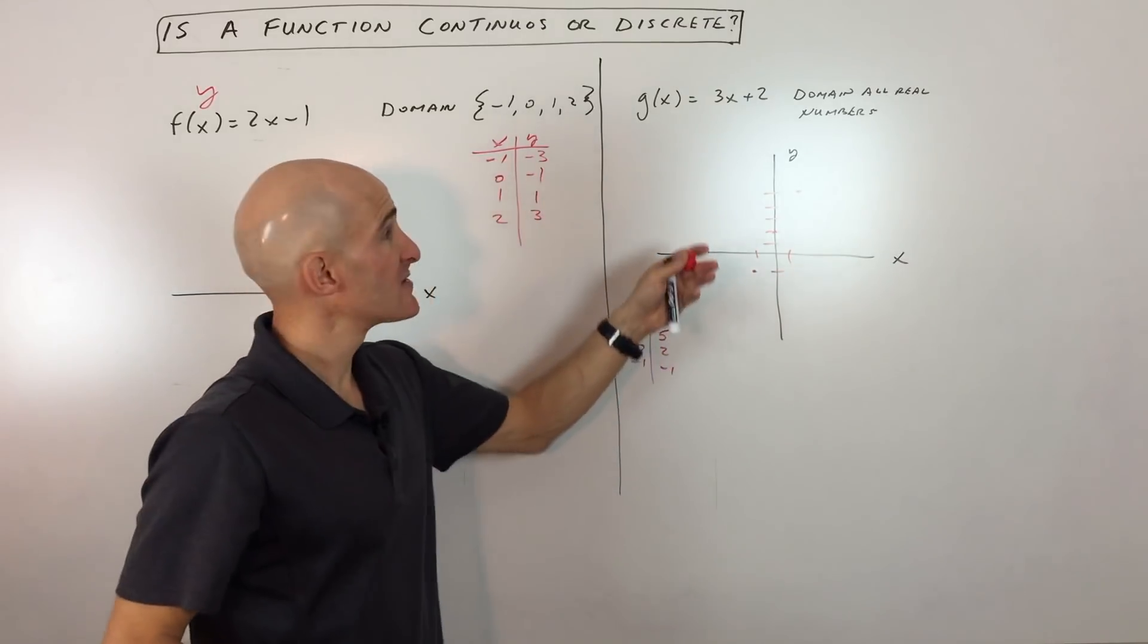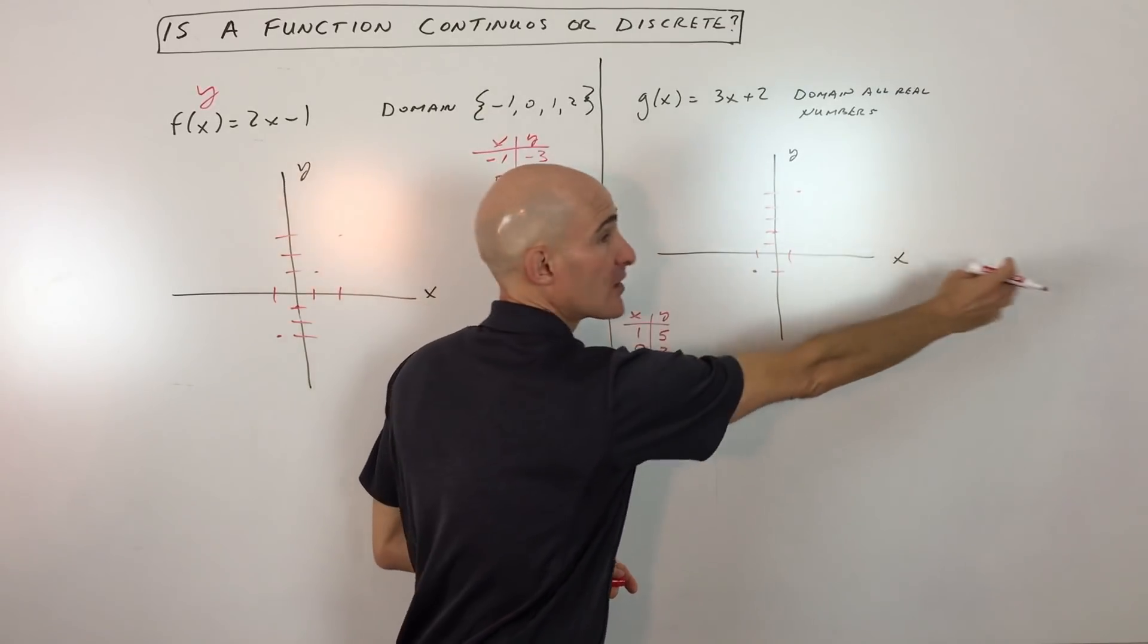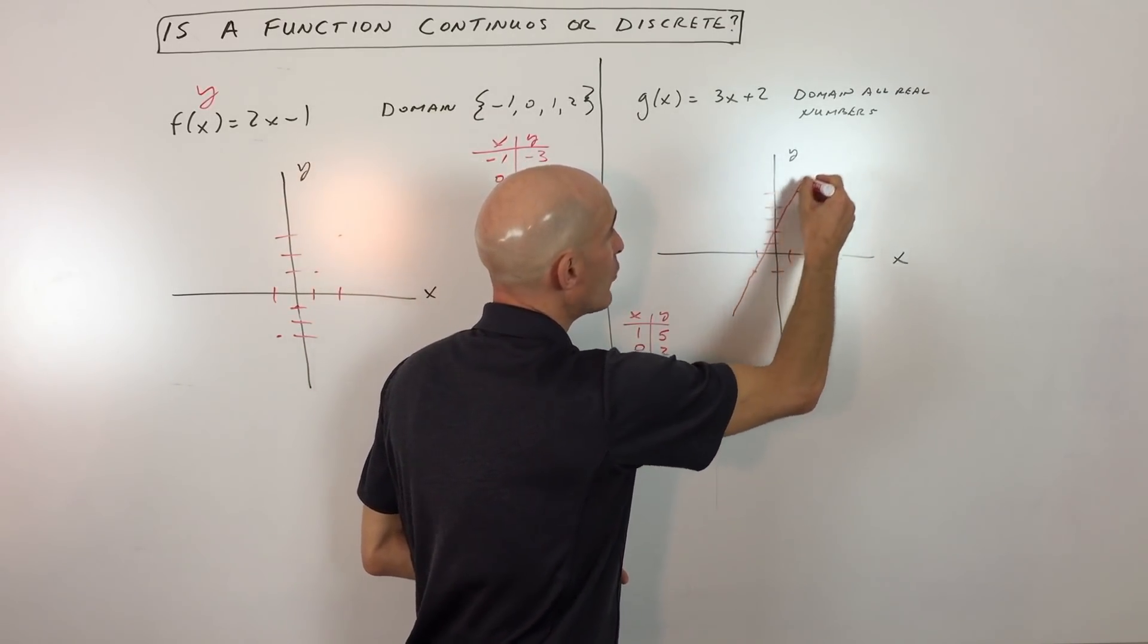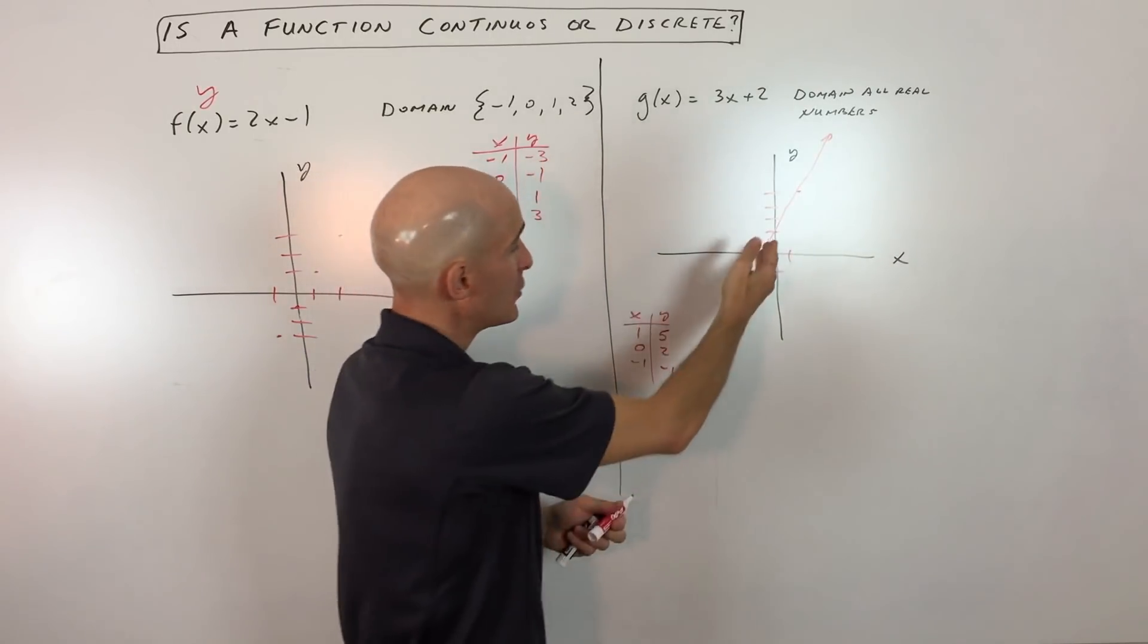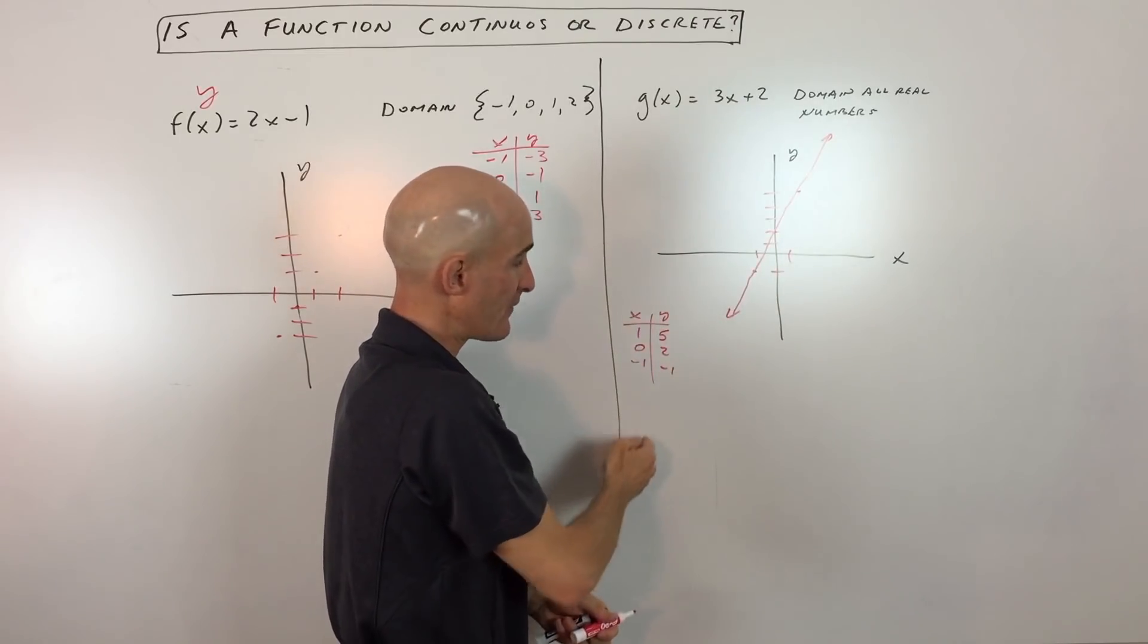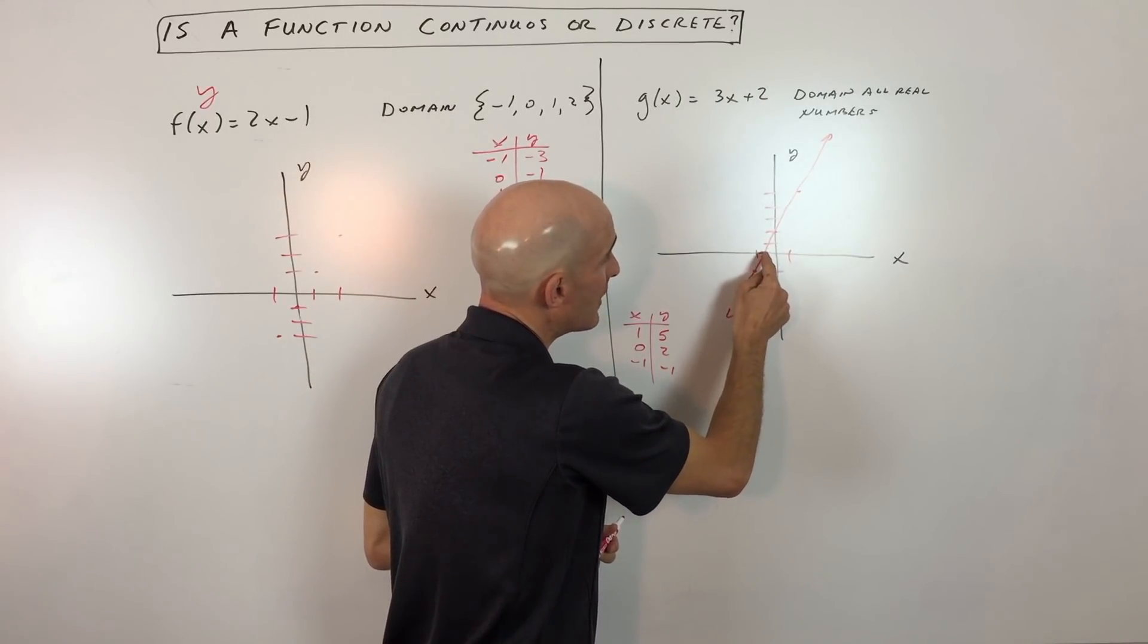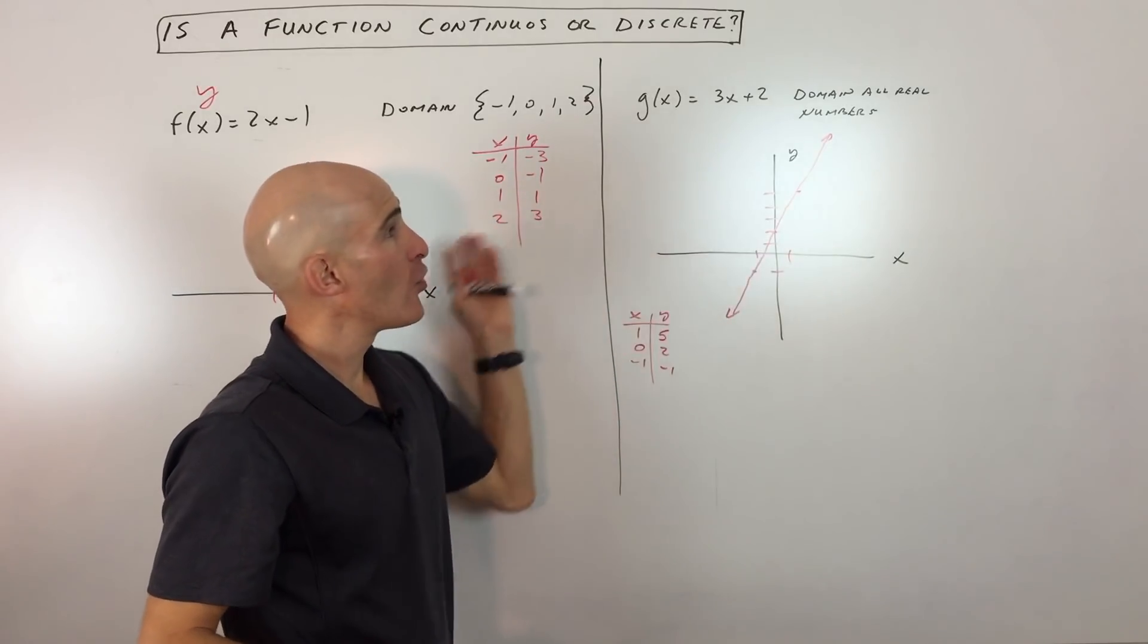Now the difference in this problem is that because the domain is all real numbers, meaning that x can be anything, all the way here to the left, all the way to the right, forever and ever, what I'm going to do is I'm going to draw a line through these points. And I'm going to also add the arrows to show that it keeps going. So if x is negative 1,000, I can still find a point on my graph here. Or if x is in between negative 1 and 0, like maybe negative 0.5, there's a point on the graph.